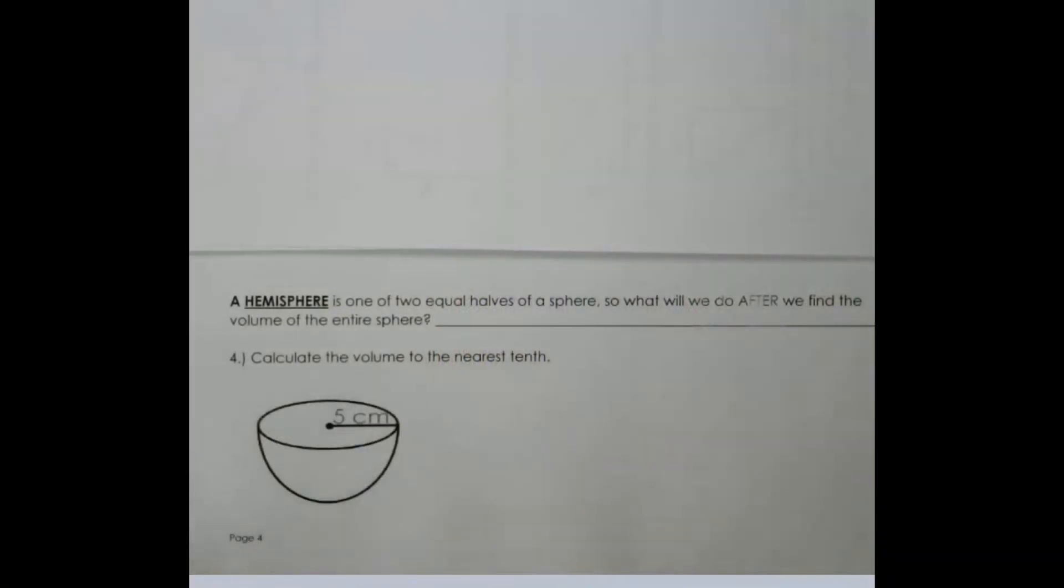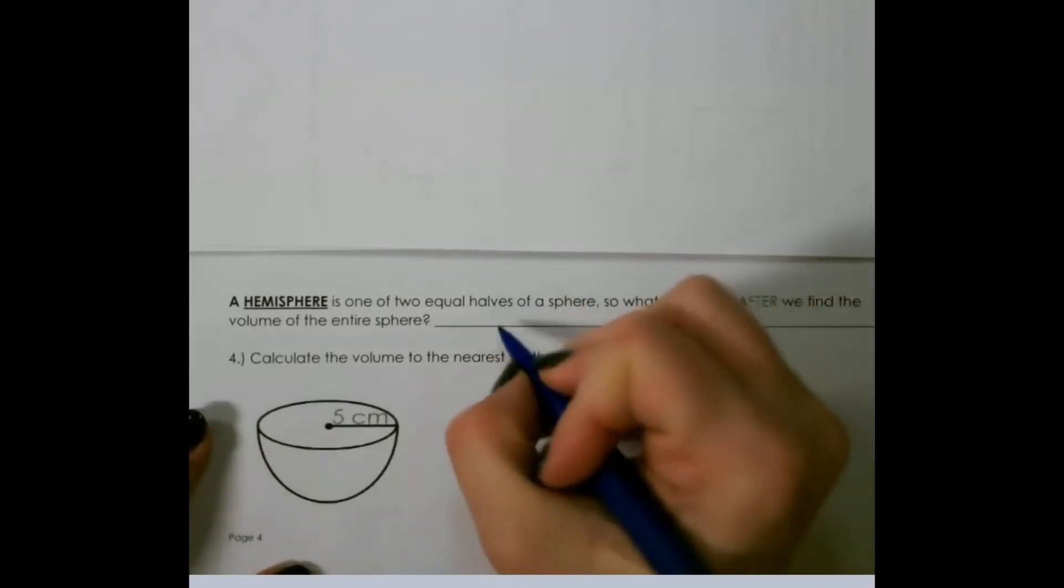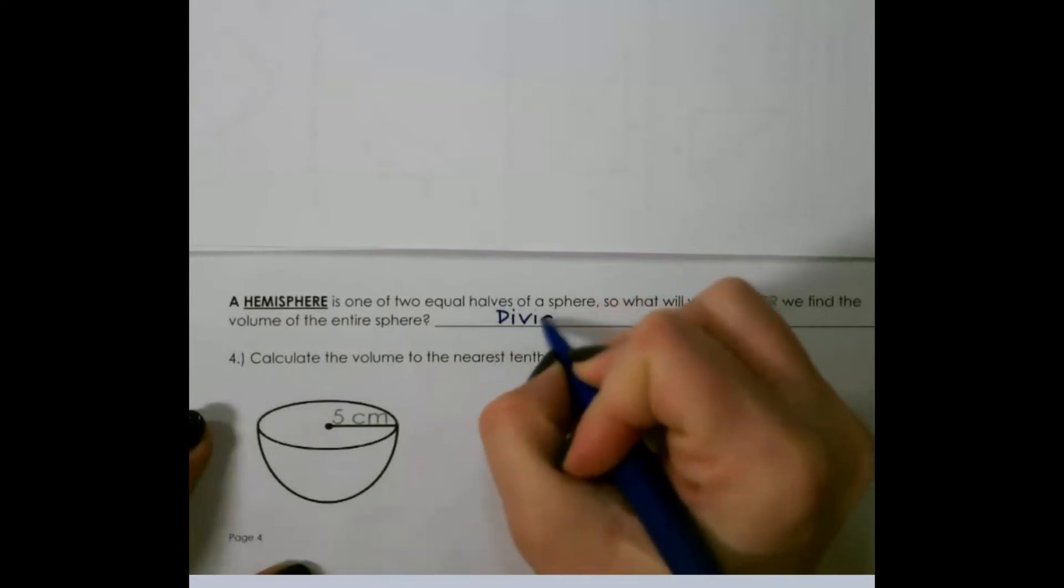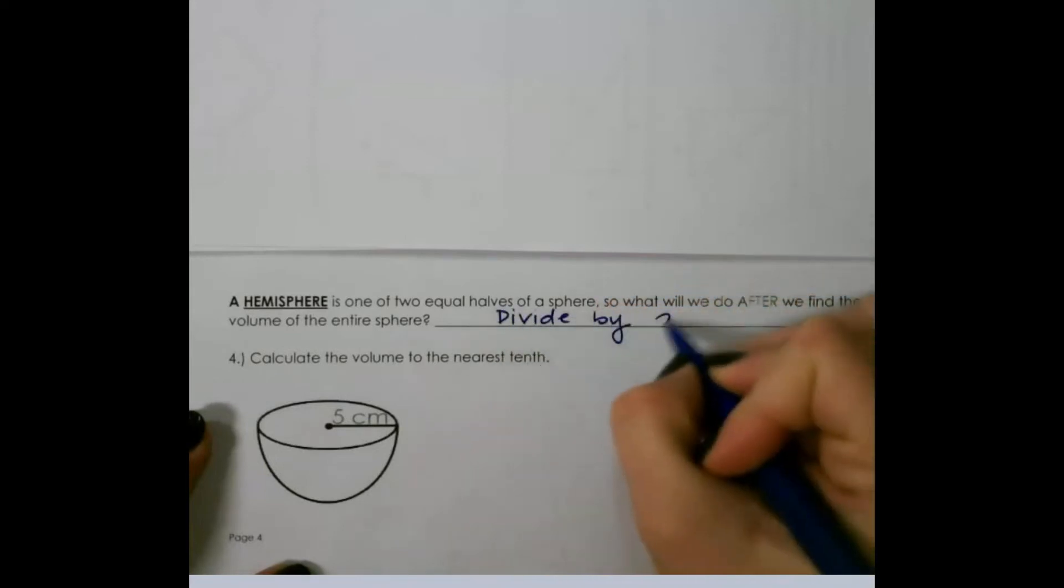A hemisphere is one of two equal halves of a sphere. So what will we do after we find the volume of the entire sphere in order to find the volume of a hemisphere? We would have to divide that number by two.